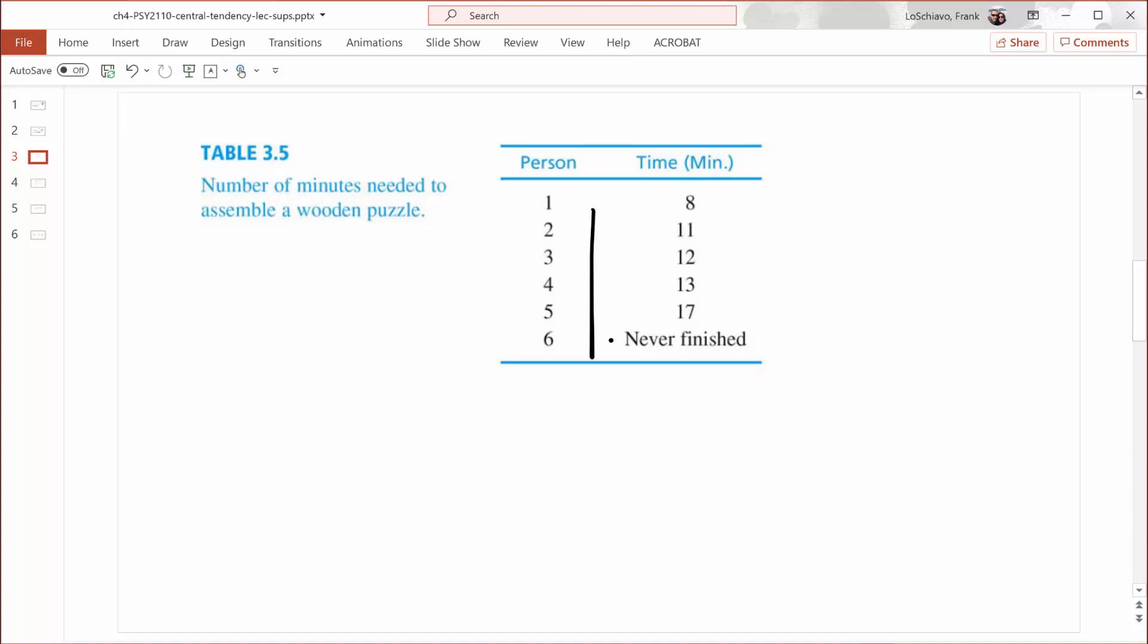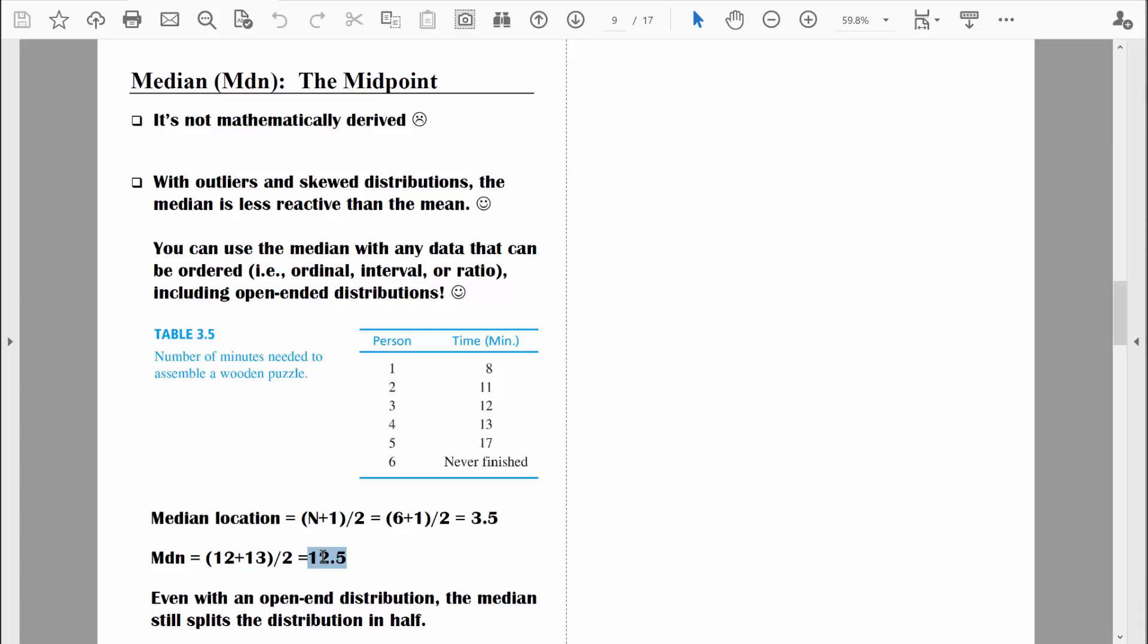We're going to work with this dataset just like any other dataset, even though it has that one value, never finished. The first thing we need to do to find the median is find the median's location. So I'll remind us of that formula. Median location equals our sample size plus one divided by two. In this particular situation, our sample size equals one, two, three, four, five, six. We have six data points. Six plus one is seven divided by two equals 3.5. So the median is between the third and the fourth location. Let's just start counting. Here's the first location, second, there's the third, there's the fourth. We simply need to average these two. So in this case, the median value is 12.5. And that's what I computed right here. So in this respect, the median is really very flexible. But there's still that nagging thing. The median is not mathematically derived. We can't build upon it and create more sophisticated statistical procedures.